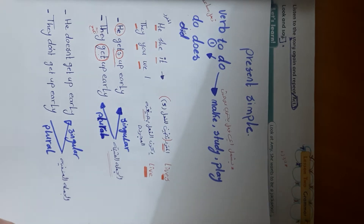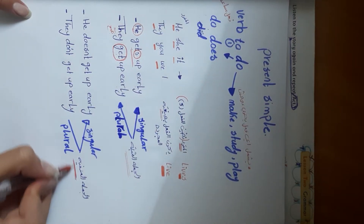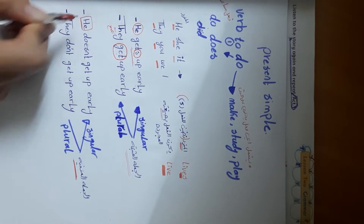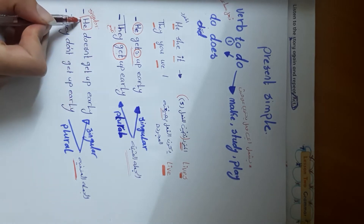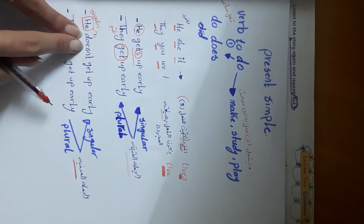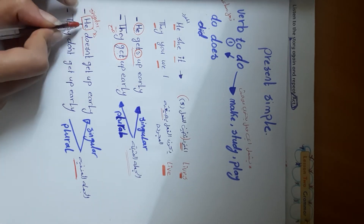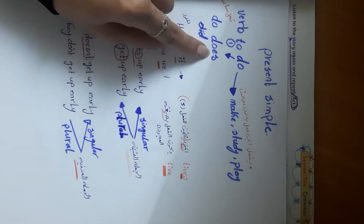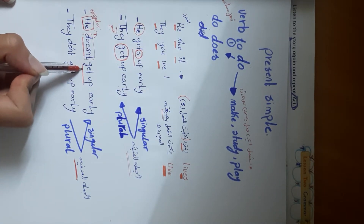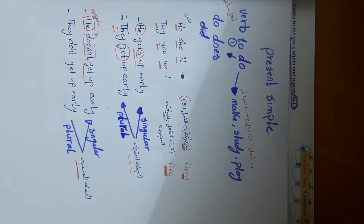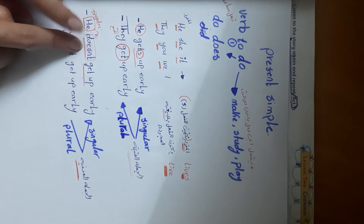Now, what about the negative form? For singular 'he,' we use the auxiliary verb 'does' and add 'not' — so we say 'doesn't.' So 'he doesn't get up early.' When we use the auxiliary 'does,' we no longer add -es to the main verb — the verb stays in its base form.